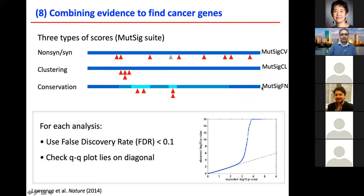Another method we added is MutSig-FN for functional impact, and we use conservation. If there are not many mutations in a gene, but they are all in highly conserved, evolutionarily conserved regions, this means that they are likely functional and therefore more likely to be drivers.